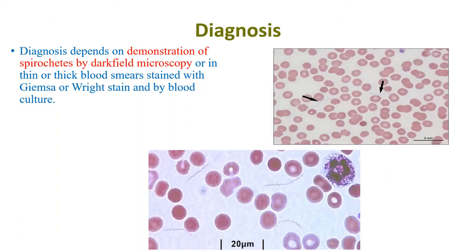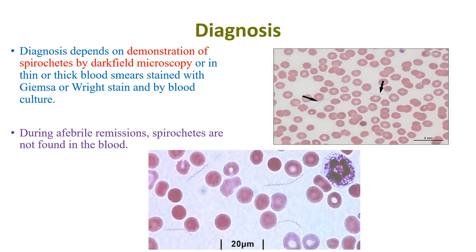Diagnosis depends on demonstration of spirochetes by dark-field microscopy, or in thin or thick blood smears stained with Giemsa or Wright stain, or in blood culture. During a febrile remission, spirochetes are not found in the blood, so laboratory work-up should be done during the febrile period.